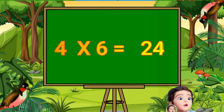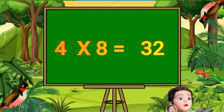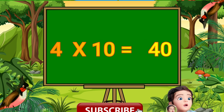Four sixes are twenty-four. Four sevens are twenty-eight. Four eights are thirty-two. Four nines are thirty-six. Four tens are forty.